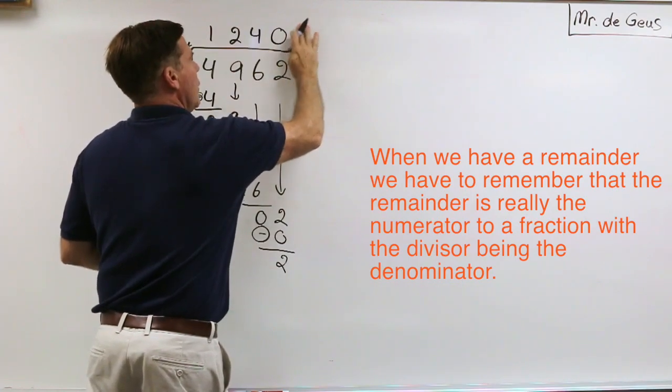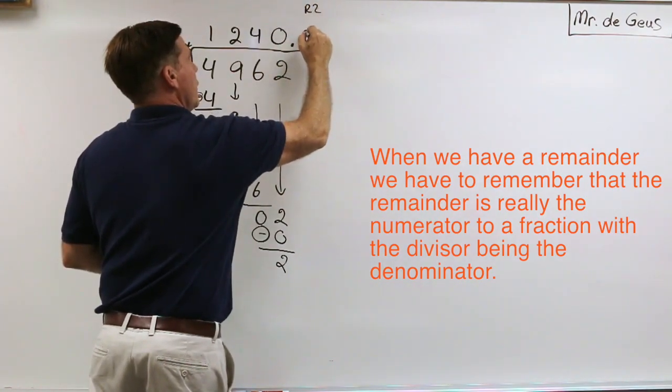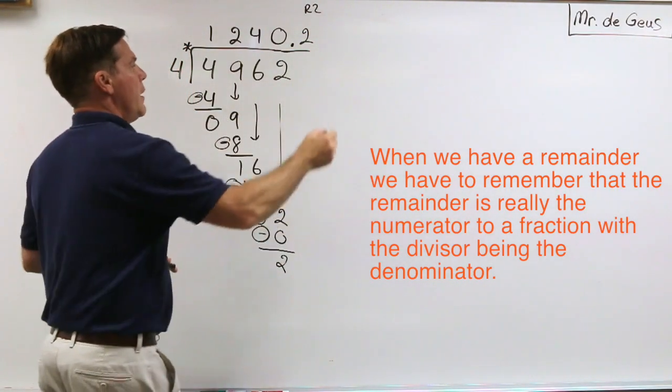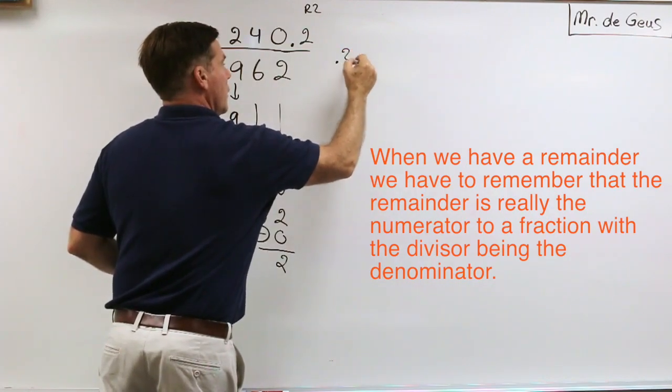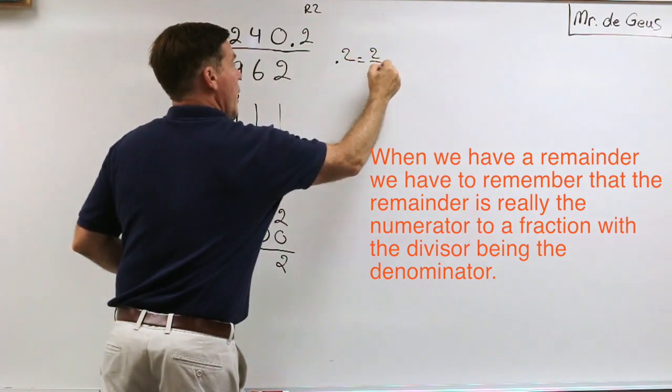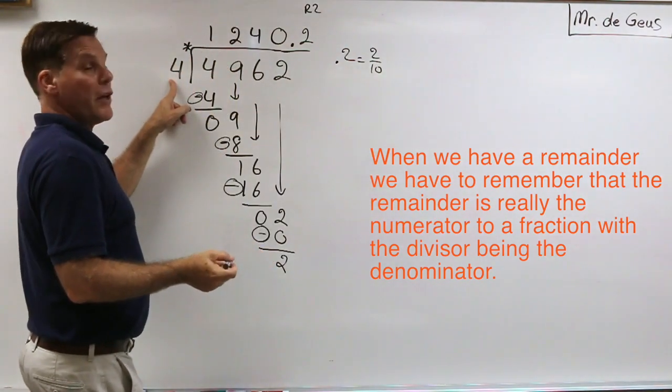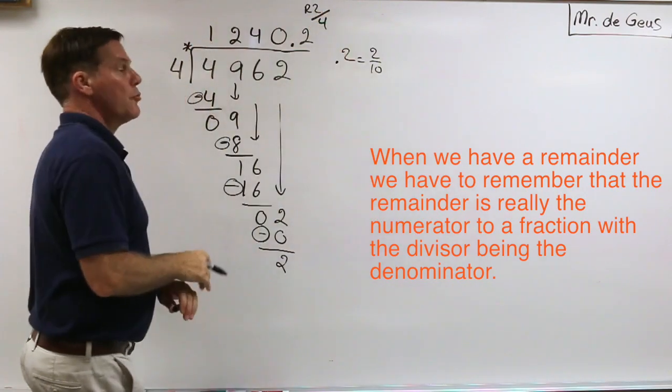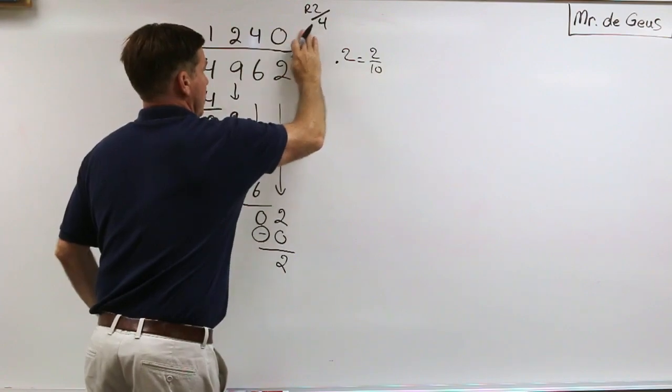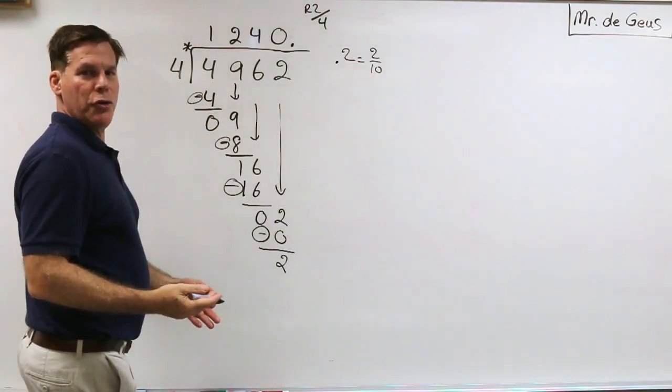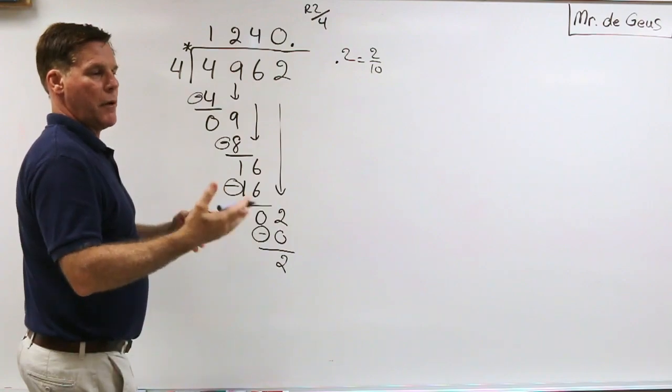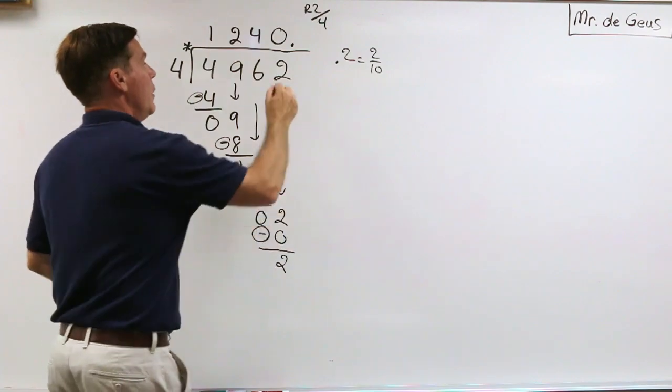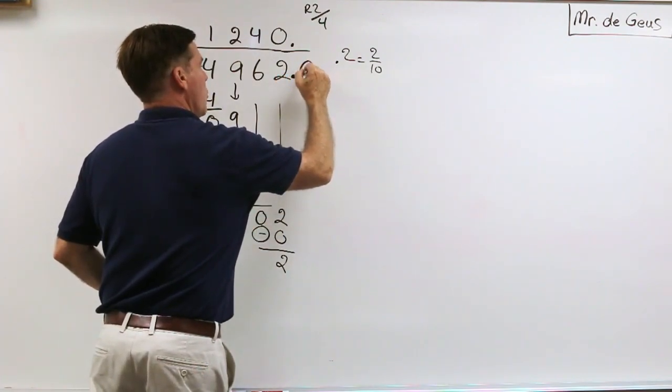And they think of the remainder, my remainder of 2, they think of it as 0.2. And what they fail to realize and they forget is 0.2 equals 2 out of 10, but this is a 4, that's not a 10. So remainder of 2 really means 2 out of 4, not a 0.2. So if you want to go ahead and continue our division problem and make a decimal out of it instead of having a remainder with the whole number, I can go ahead and just put a decimal point and a zero.